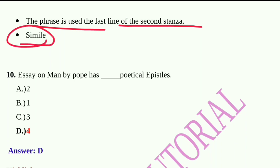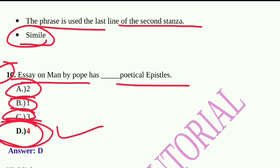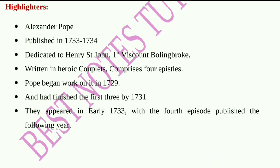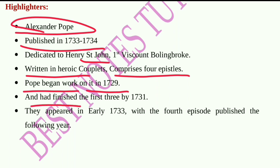Question number ten: 'Essay on Man' by Pope has how many verse epistles? Options: 2, 1, 3, or 4. Option D, four, is correct. It was written by Alexander Pope, published in 1733–1734, and dedicated to Henry St. John, First Viscount Bolingbroke. It is written in heroic couplet and comprises four epistles. Pope began work on it in 1729 and finished the first three by 1731; they appeared in early 1733, with the fourth epistle published the following year.